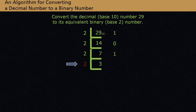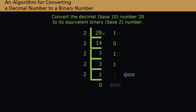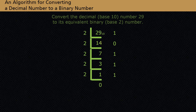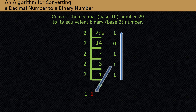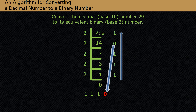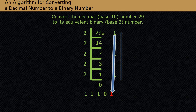Now divide 2 into 3. If we divide 2 into 3, we get a quotient of 1 with a remainder of 1. Note the placement of the remainder. Once we get a quotient of 0, the division process is complete. The binary equivalent of decimal 29 is obtained by using the remainders in the right column. We write the binary equivalent by starting at the bottom of the remainder column and working up.